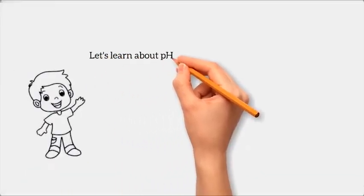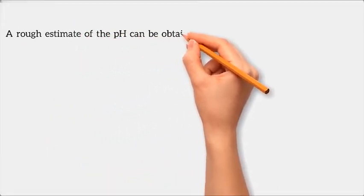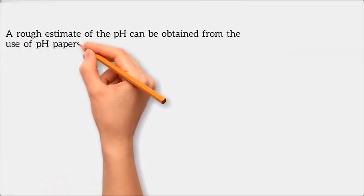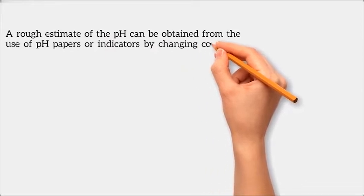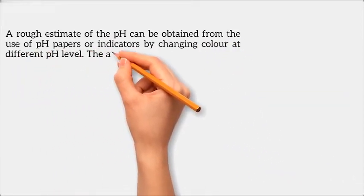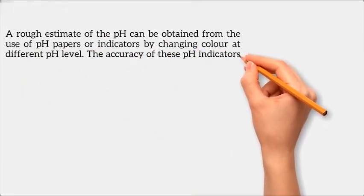Let's learn about pH meters and their working principle. A rough estimate of the pH can be obtained from the use of pH papers or indicators by changing color at different pH levels. The accuracy of these pH indicators is limited.